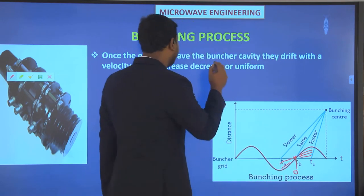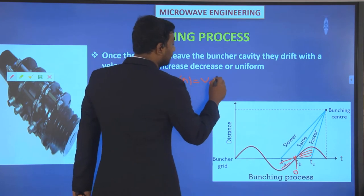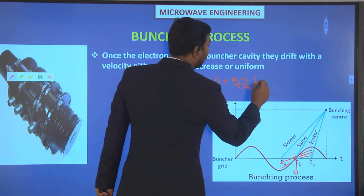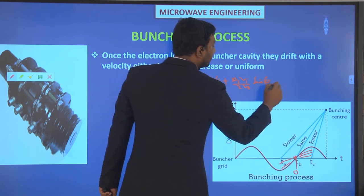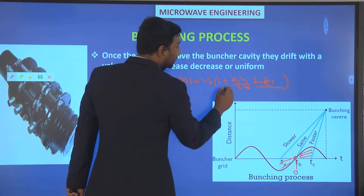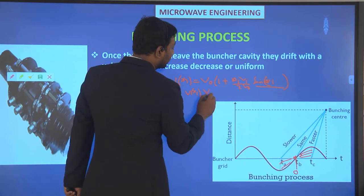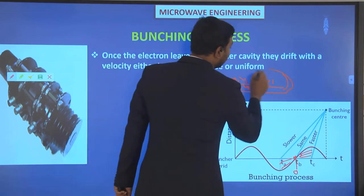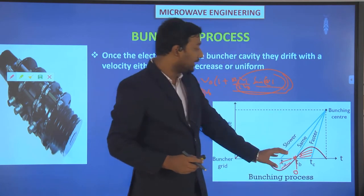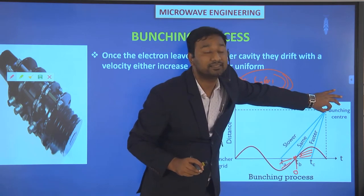So vt1 depends on V0 times (1 plus β_i·V1 / 2V0) times the sine part. Whenever vt1 is greater than V0, this sine part has a positive value. Whether electrons are faster, slower, or the same, after some instant of time they all reach a particular point called the bunching center.